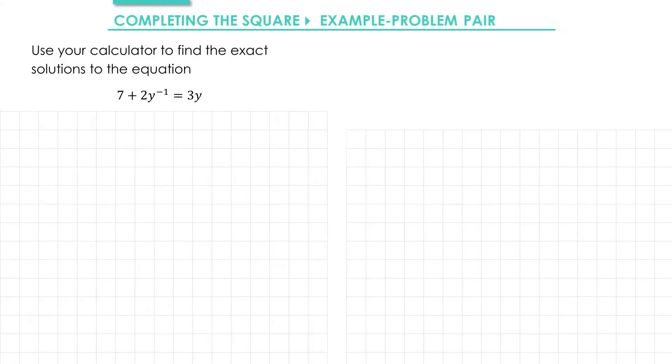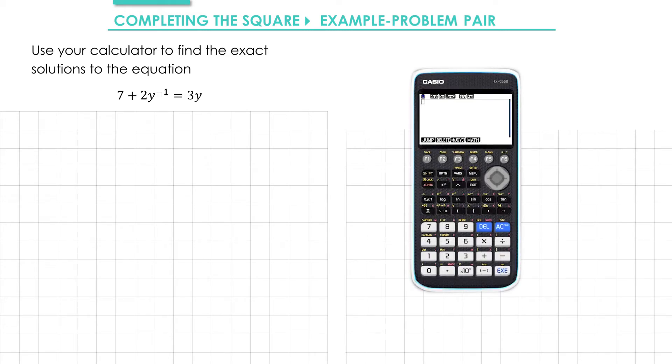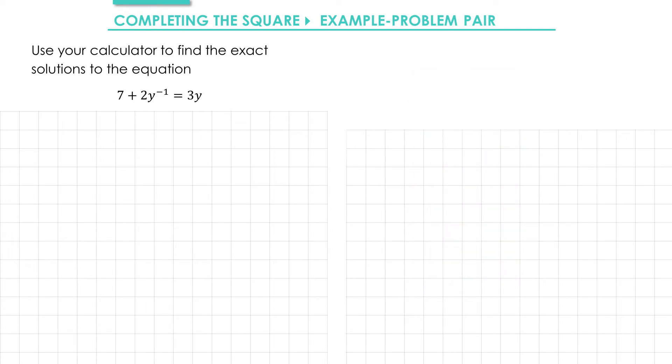In this example we're going to be looking at solving quadratic equations directly using your calculator. Don't worry that this doesn't look like a quadratic yet, we're going to rearrange it in a minute. The calculator I'm going to use to solve this equation is the Casio FX CG50, however the steps are exactly the same if you have a Casio FX 9860 G2. If you're using the Casio ClassWiz, have a look in the description and there's a tutorial on how to use that calculator to solve quadratics as well.